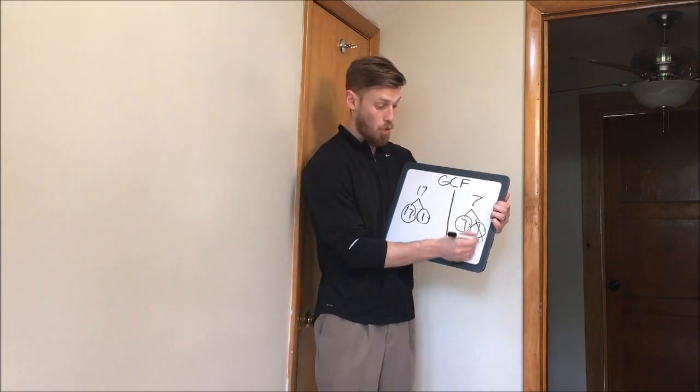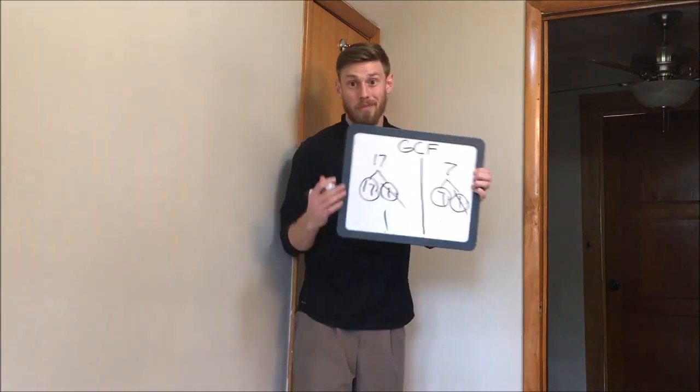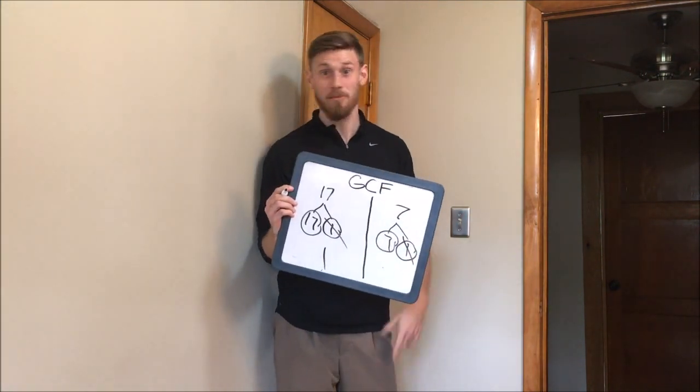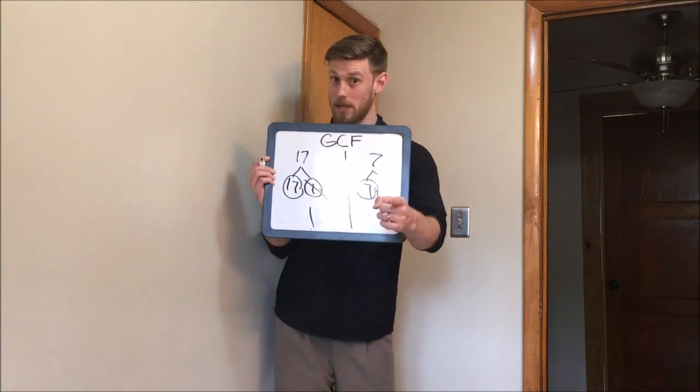Look here, Gramps. 1, 1. Pick a side. 1 goes into anything. So technically, you always have something. It's not going to be 0. You will at least have one. Does that make sense?